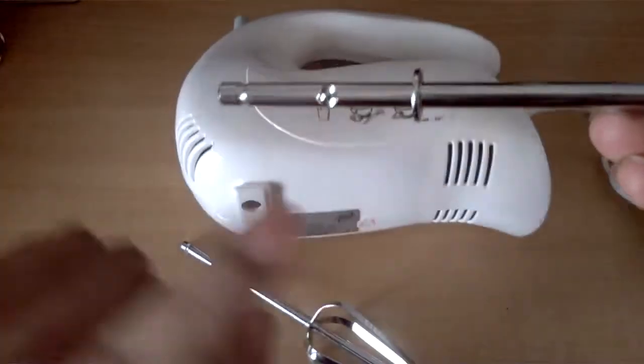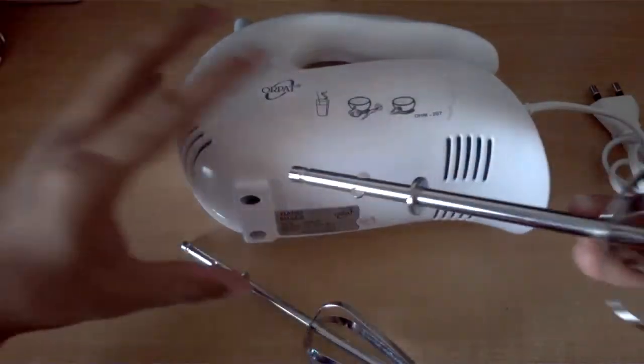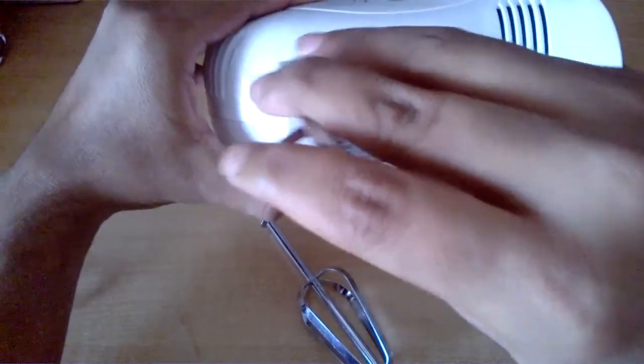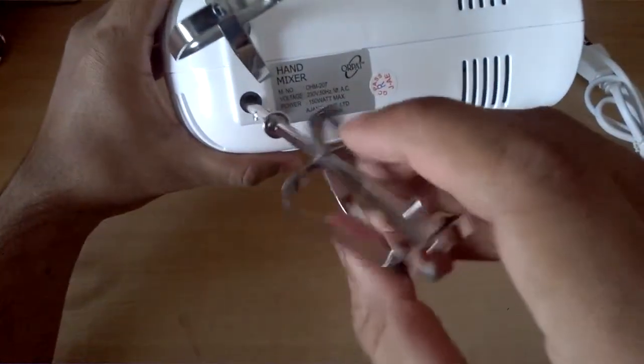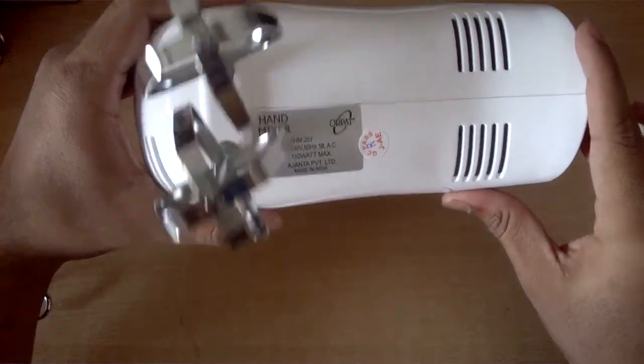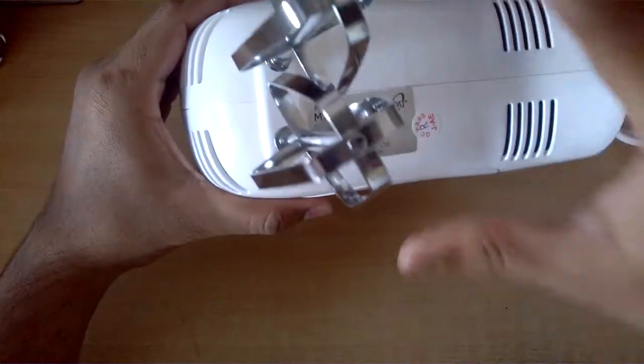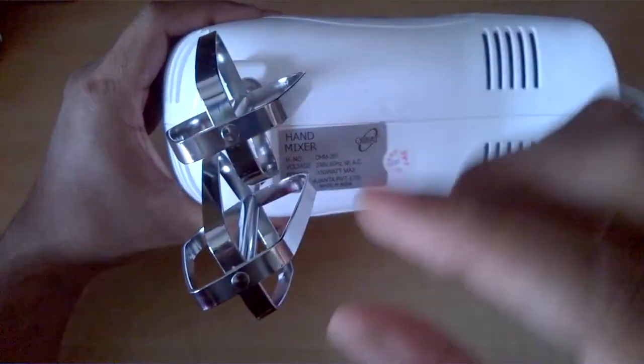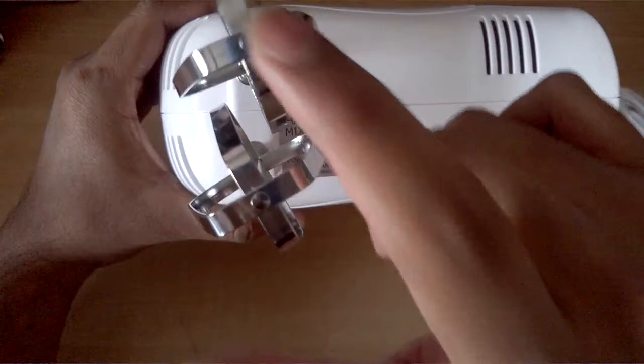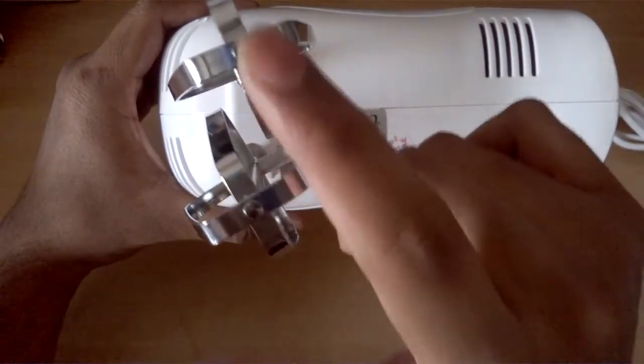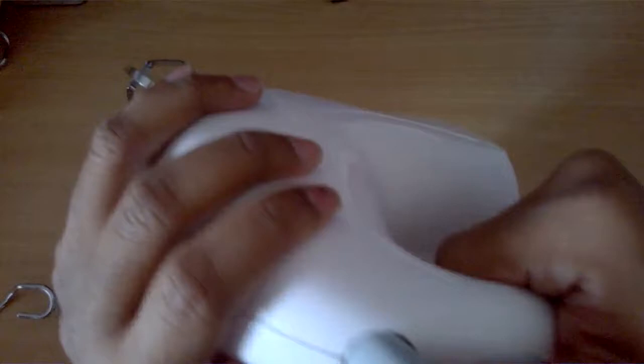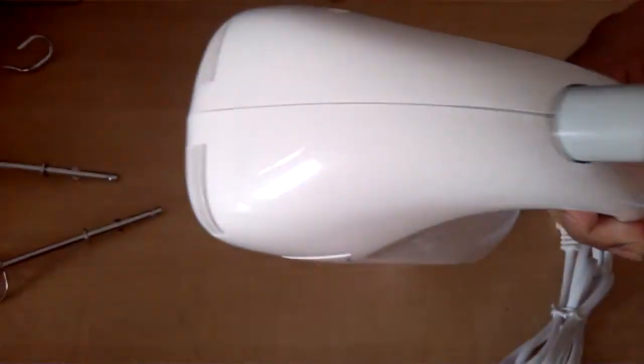You need to align this with the slot correctly. Okay so it's fixed now, let's put the second one as well. So it's done. Now you may notice that these two beaters overlap each other but don't worry about that because when these two rotate at the same speed, the motors rotate at the same speed, then they won't hit each other. Now let me show you how to remove this thing, just press this button and it will come out.